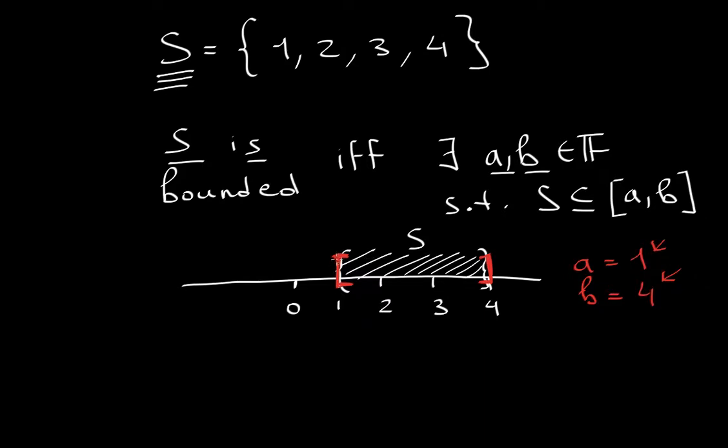So clearly this interval encapsulates the set of S. Now if I was to choose negative 55 as my a, and 1,000 as my b, so that's my b and that's my a, then still, S would still be a subset of this interval.